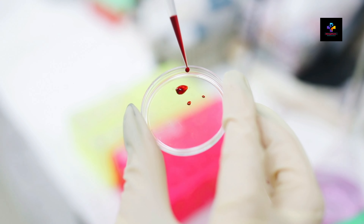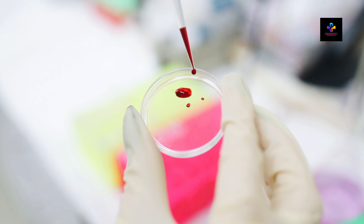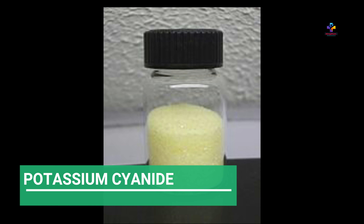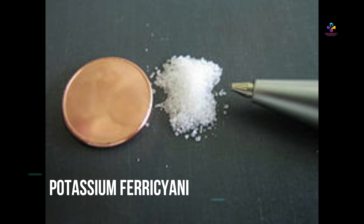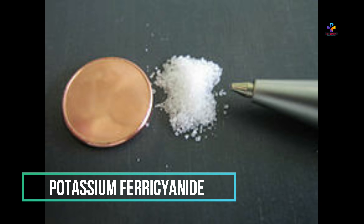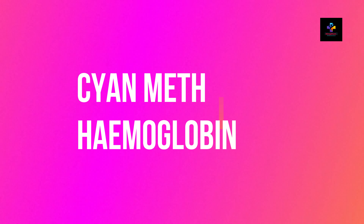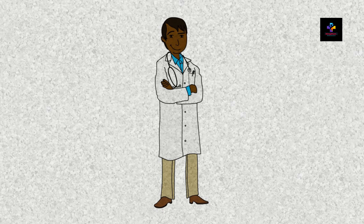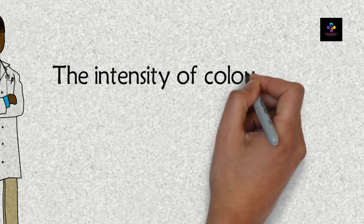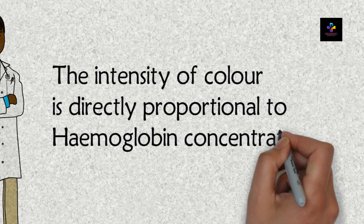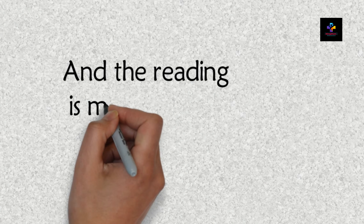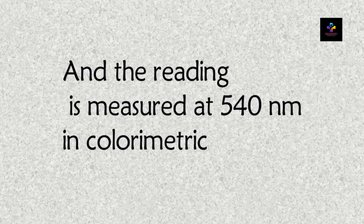Principle: A small quantity of blood is taken and allowed to react with potassium cyanide and potassium ferricyanide. The chemical reaction gives a product of specific color called cyanmethemoglobin. The intensity of color is directly proportional to hemoglobin concentration, and the reading is measured at 540 nanometers in a colorimeter, also called the green filter.